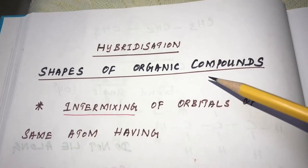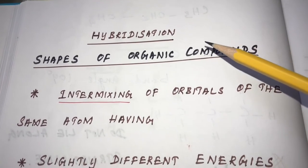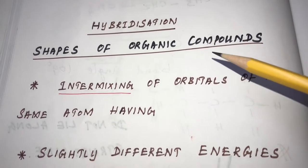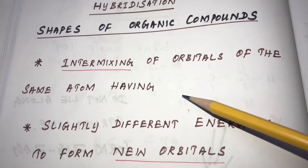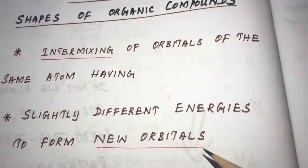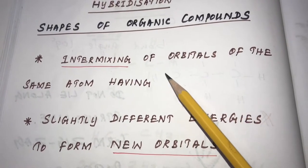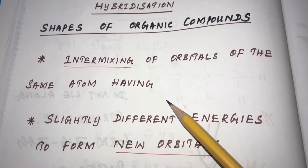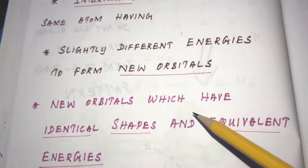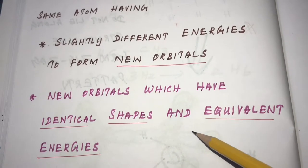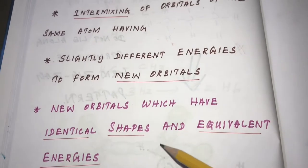Hybridization — shapes of organic compounds. What is hybridization? Hybridization actually determines the shapes of organic compounds. Hybridization is the phenomenon of intermixing of orbitals of the same atom having slightly different energies to form new orbitals. The new orbitals have identical shape and equivalent energy.